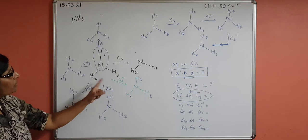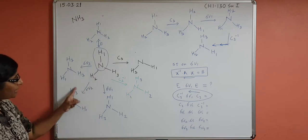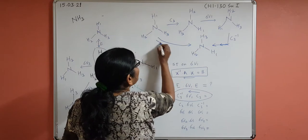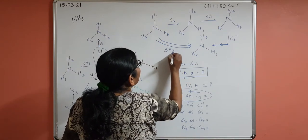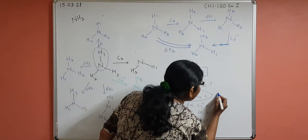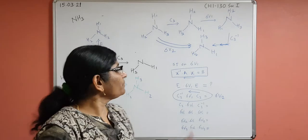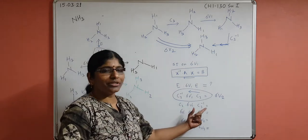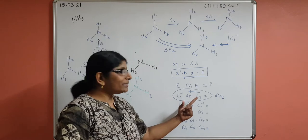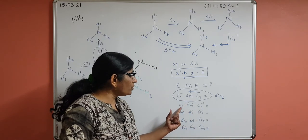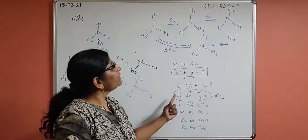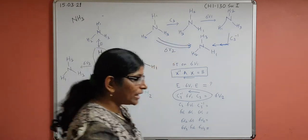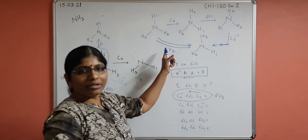Looking at the standard operations on the original molecule, performing σV2 ends up with H3 at top, H1, and H2 — which matches our result. Therefore, C3·σV1·C3⁻¹ = σV2. Likewise, for C3⁻¹·σV1·C3, you first perform C3⁻¹ (anticlockwise) on the original, then σV1, then C3 on the resultant molecule, and the answer will be σV3.